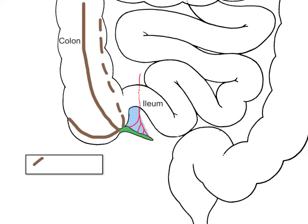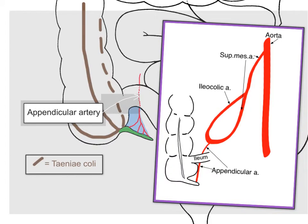Zooming in closer to the appendix, one can see that it has a mesentery called the meso-appendix, which is attached to the terminal ileum inferiorly. Behind the ileum, you can see the appendicular artery, which then runs between the layers of the meso-appendix in order to reach the appendix to supply it. The appendicular artery is a branch of the ileocolic artery, which in turn is a branch of the superior mesenteric artery, which arises from the abdominal aorta.